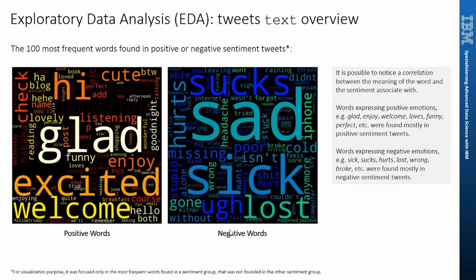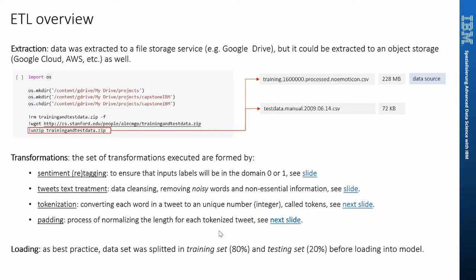Here we see the ETL overview where I highlighted the main actions taken. In terms of extraction, the data was extracted to a file storage service — in this case Google Drive — but you could also have used object storage as well. In terms of transformations, we have already covered the sentiment retagging and the tweets text treatment. There are two more transformations needed — tokenization and padding — that we'll cover in the next slide. As for the loading part, the dataset was split into training set and test set in an 80/20 proportion before loading it into the model, as best practice dictates.